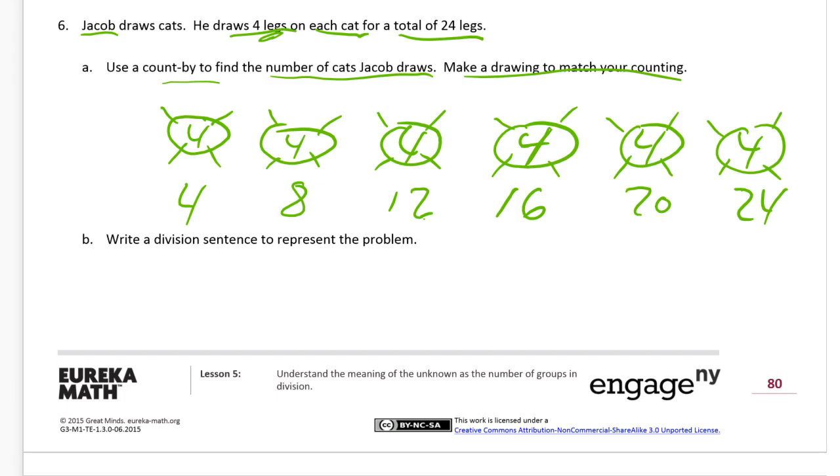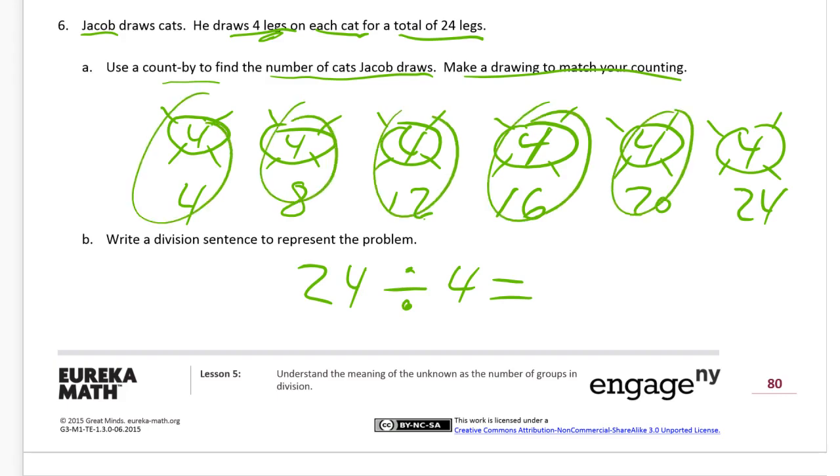Write our division sentence to represent the problem. We have twenty-four legs divided by four legs on each cat. And that's going to equal how many cats? That's one, two, three, four, five, six cats. And that's our quotient.